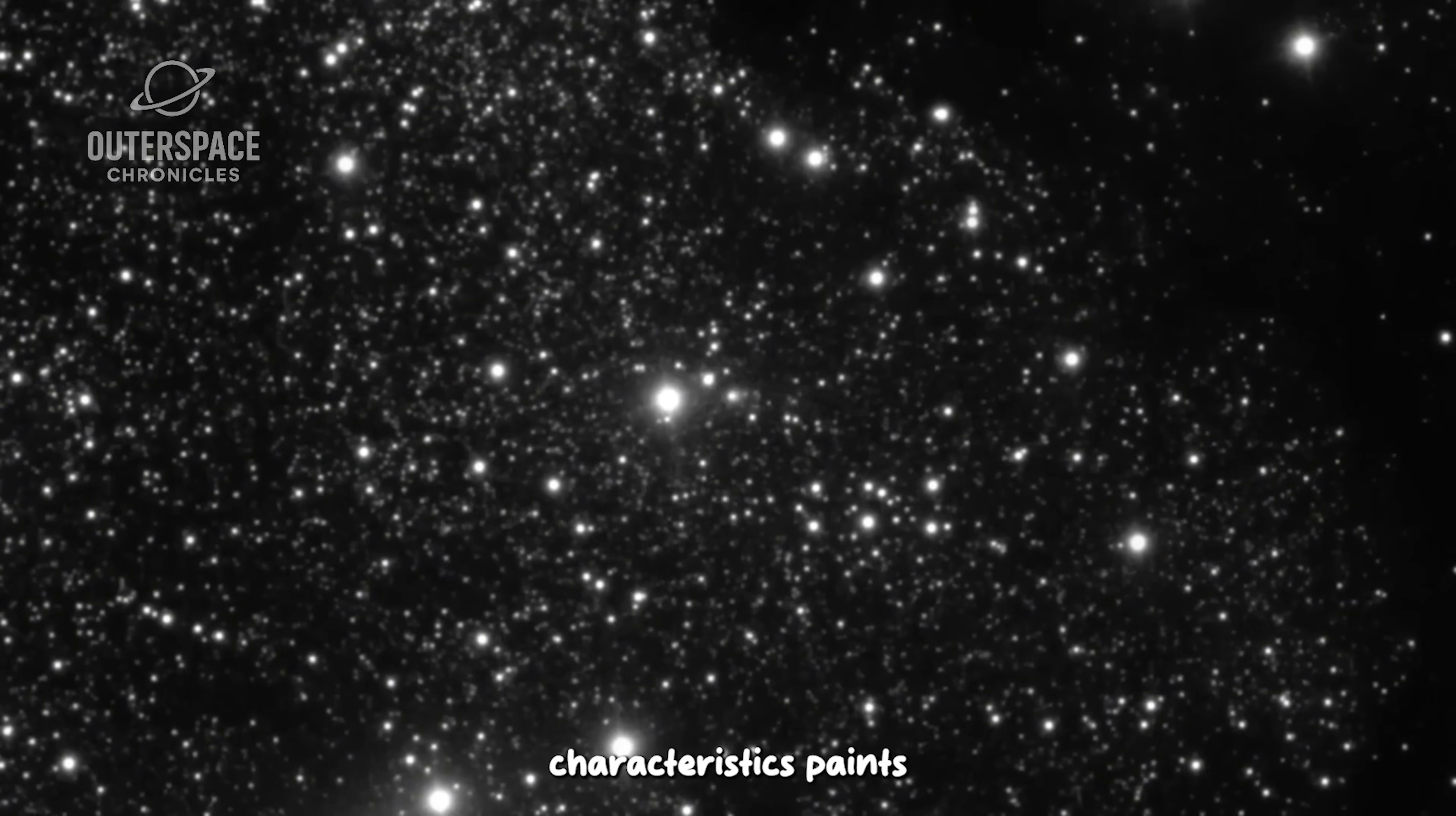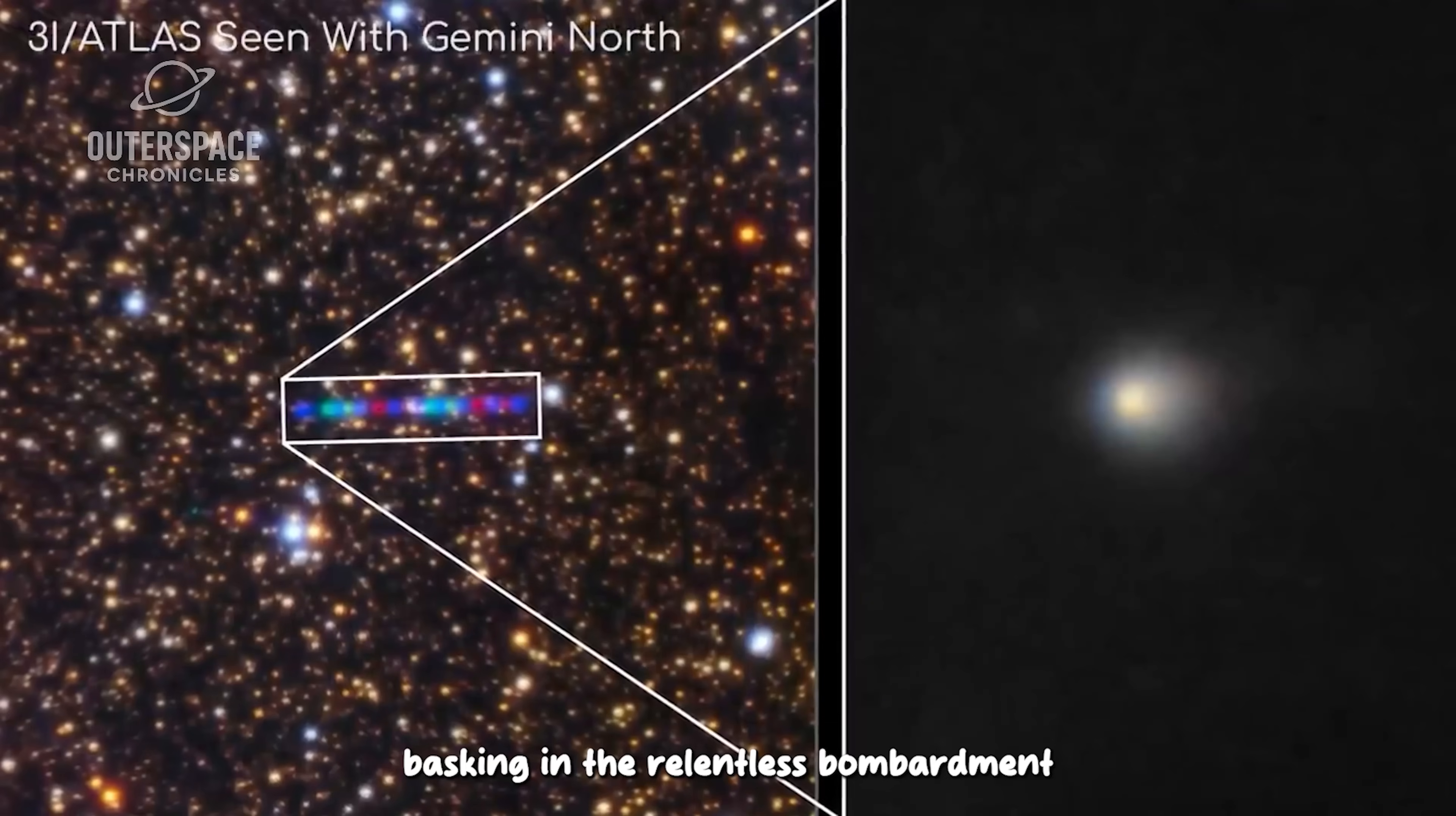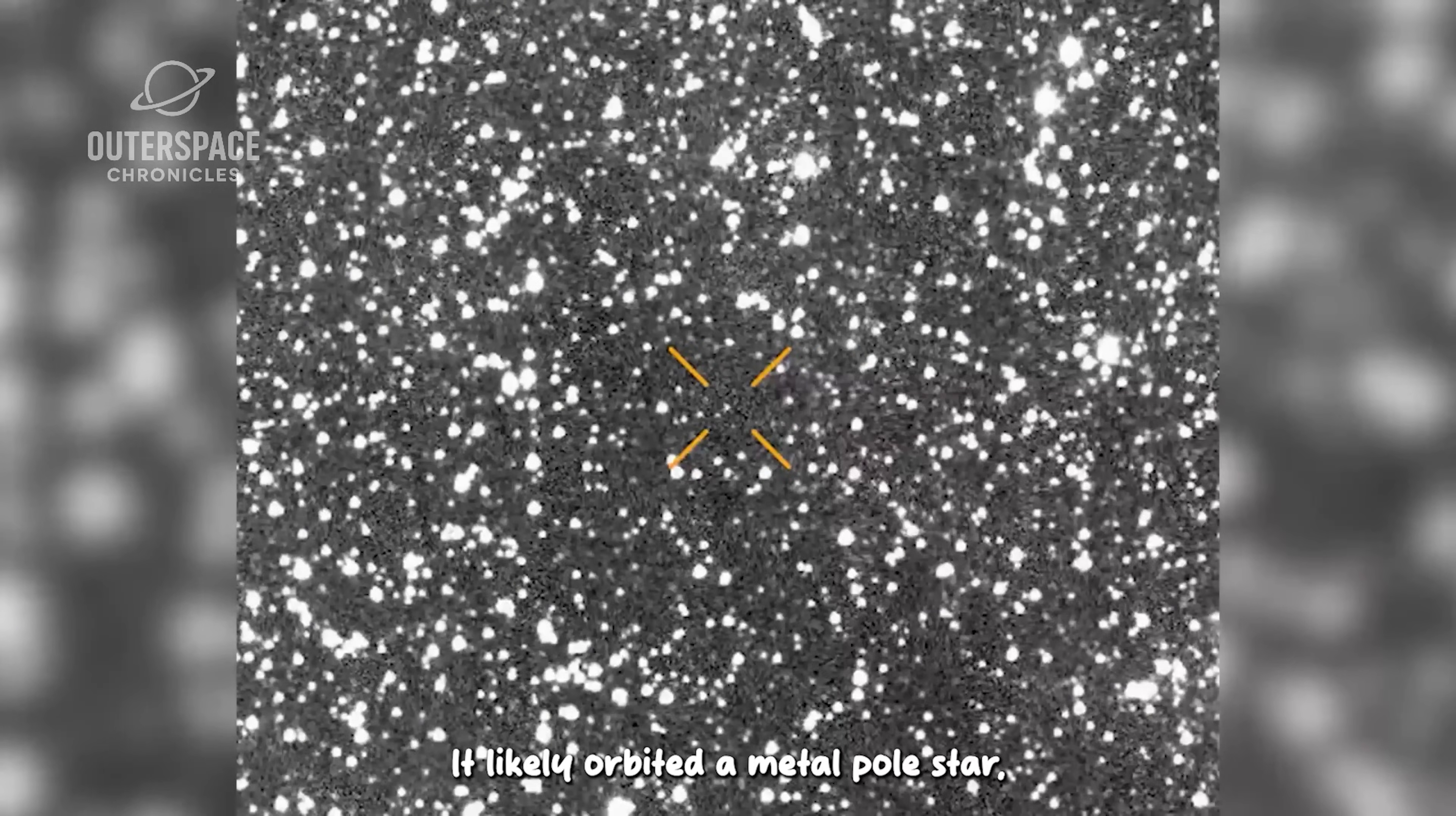This collection of characteristics paints a vivid picture of 3I Atlas's potential history, illuminating its journey through the cosmos. It suggests that this comet has endured countless eons basking in the relentless bombardment of hard radiation, making it a remnant from a planetary system that contrasts sharply with our own.